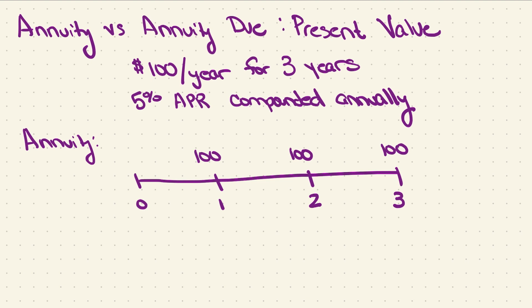Starting out with the regular annuity, this timeline I have right here has three cash flows. Each cash flow occurs at the end of each period. If I find the present value of this annuity, the way the present value of an annuity equation works is it takes me one time period before the first cash flow. So the present value of this annuity at t equals zero is going to be equal to the cash flow times 1 minus 1 plus i to the negative n divided by i.